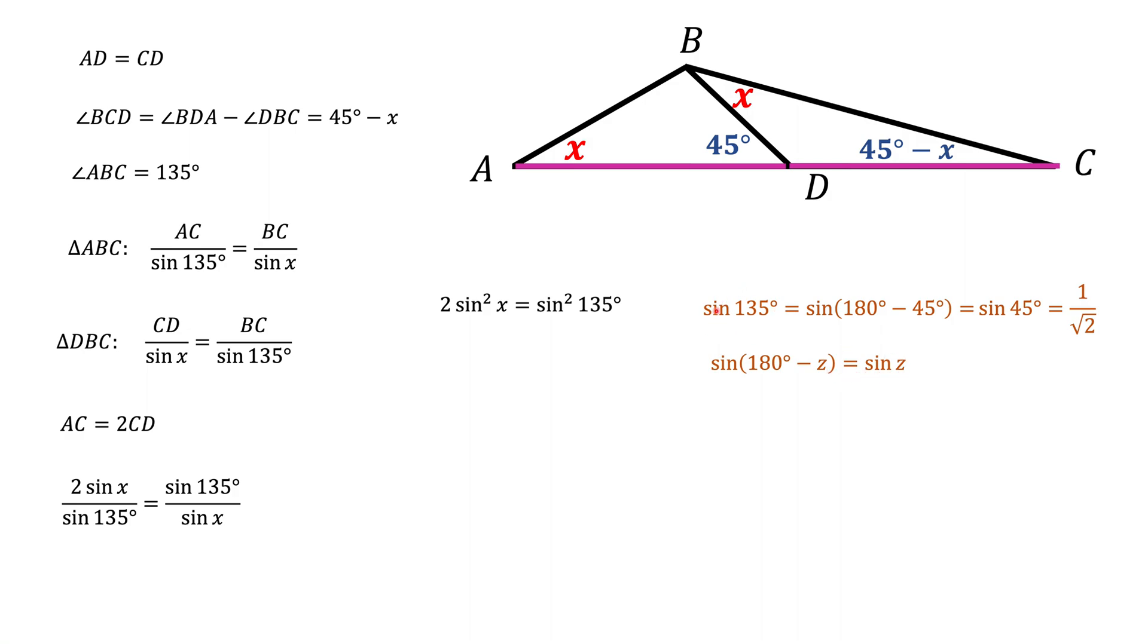If you substitute the value for the sine into this equation and divide the equation by 2, we get sine squared X equals 1 fourth. That means sine of X equals plus or minus 1 half.